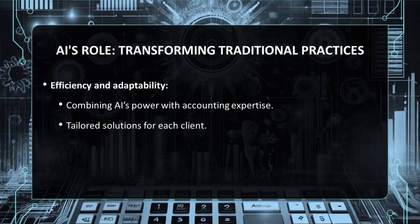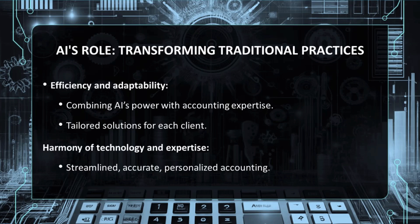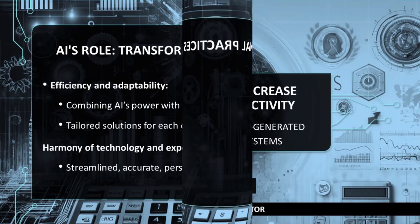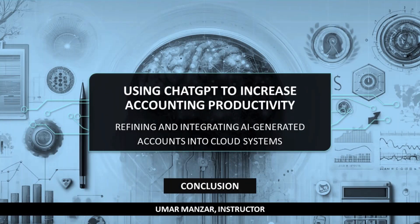In conclusion, what we have here is a testament to how artificial intelligence, particularly tools like ChatGPT, can revolutionize traditional accounting practices. By combining AI's computational power with your accounting acumen, the creation and implementation of a chart of accounts becomes not only more efficient, but also more adaptable to the unique needs of each client. This process exemplifies a harmonious blend of technology and human expertise, paving the way for a more streamlined, accurate, and personalized approach to accounting. As we continue to embrace these digital advancements, our capacity to deliver top-tier accounting services grows exponentially, reinforcing our role as indispensable advisors in the ever-evolving financial landscape.